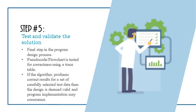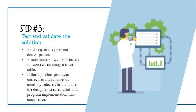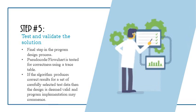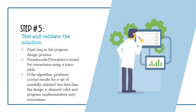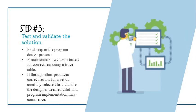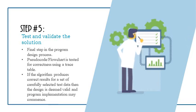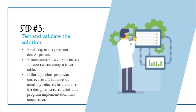Step five: test and validate your solution. This is the final and very important step in the design process that some people tend to overlook. Your pseudocode or flowchart is tested for correctness using what is called a trace table. If the algorithm produces correct results for a set of carefully selected test data, the design is deemed valid and program implementation may commence. Computers help us develop programs that take us from a problem to a solution.